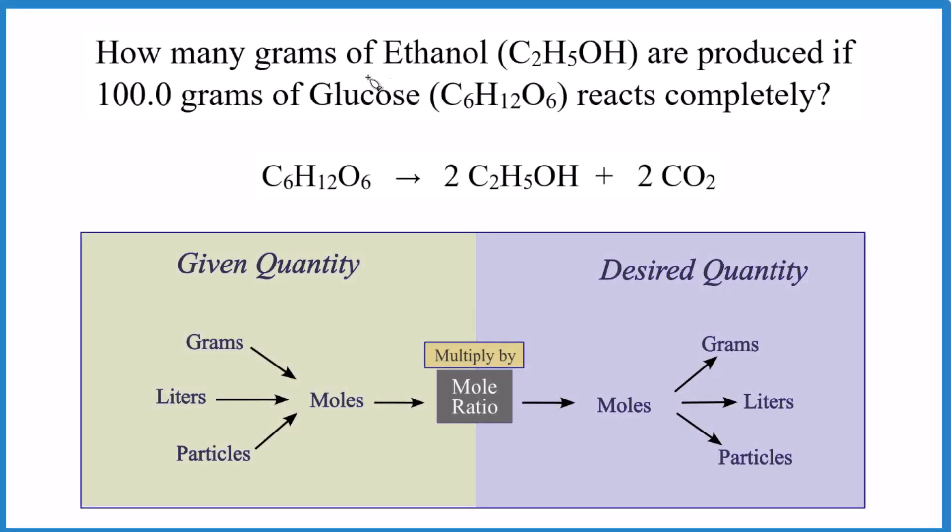Alright, so we're trying to figure out how many grams of ethanol, C2H5OH, are produced if we have 100 grams of glucose, C6H12O6, that reacts completely. Here's the equation, it's already balanced, and basically we have 100 grams of glucose right here.